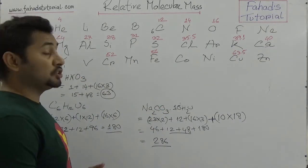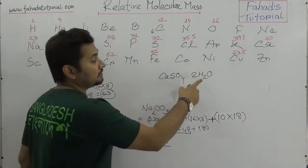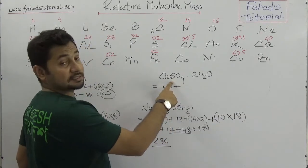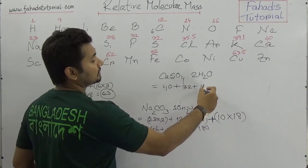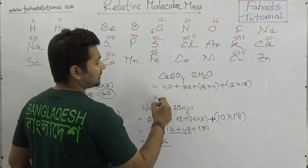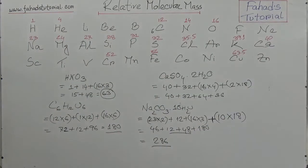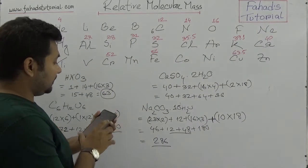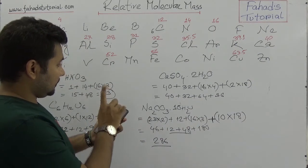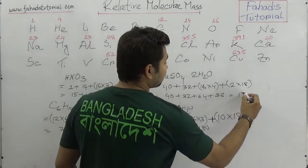When something like crystal water is attached — such as in gypsum, CaSO₄·2H₂O — two molecules of water are attached. Calcium is 40, plus sulfur is 32, plus oxygen is 16 times 4 equals 64, plus 2 molecules of water: 2 times 18 equals 36. So: 40 plus 32 plus 64 plus 36 equals 172. The relative molecular mass of gypsum is 172.